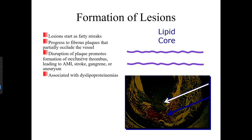When a plaque inside a blood vessel gets dislodged, it becomes a clot — an embolism — floating through the bloodstream. Emboli can lodge in blood vessels throughout the body: in a vessel feeding a finger, causing gangrene; in a vessel feeding the brain, causing a stroke; or in a vessel leading to the heart, causing acute myocardial infarction.